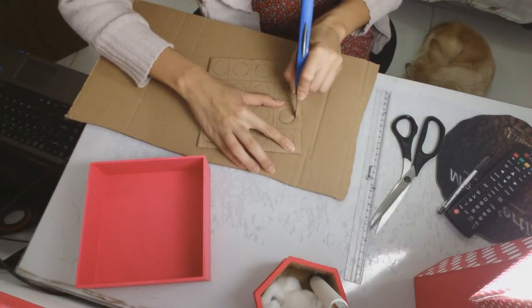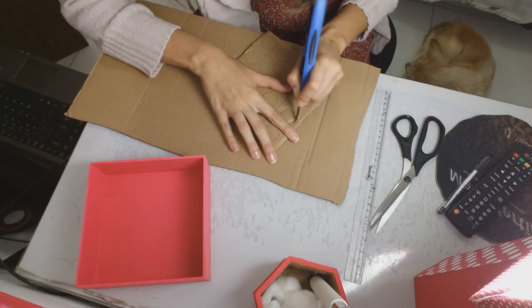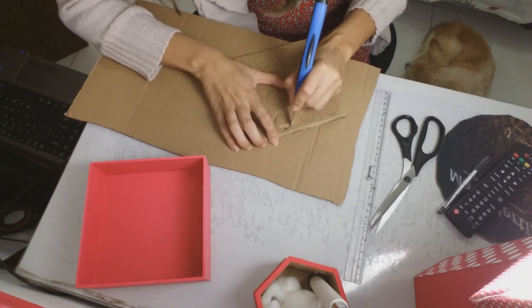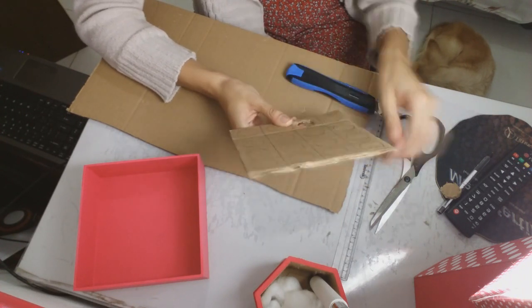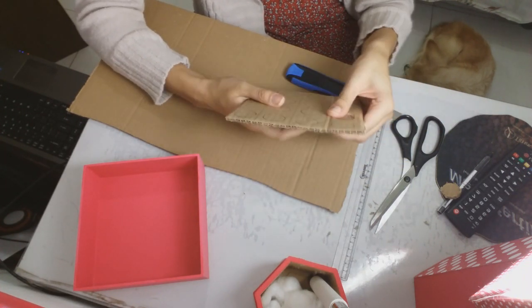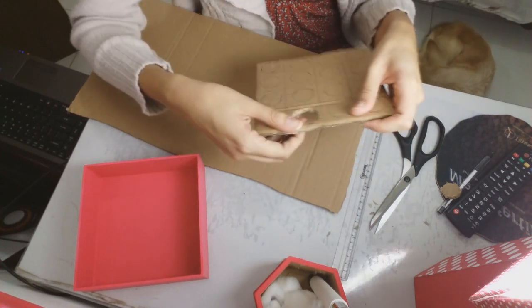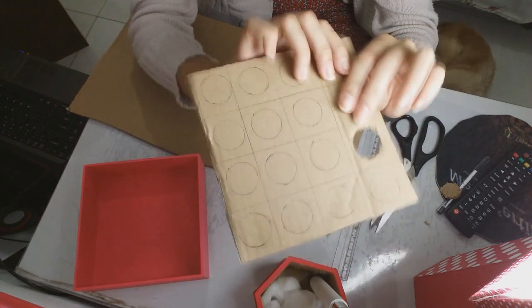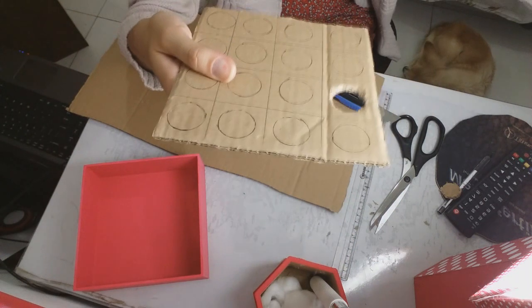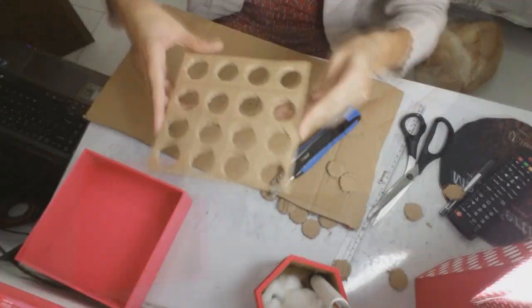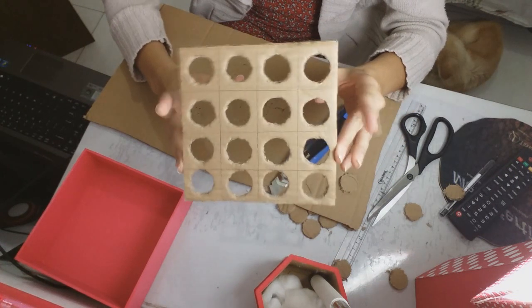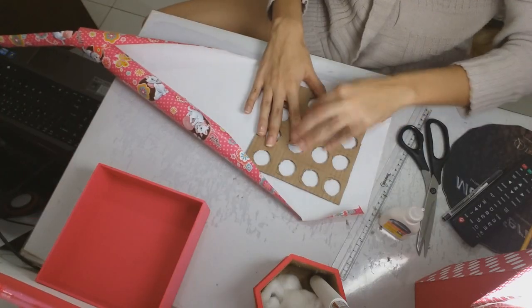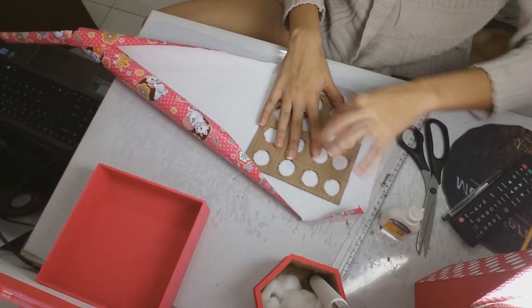Agora você vai cortar os círculos com estilete, com muito cuidado. Pronto. Todos os círculos cortados. Agora vamos cobrir toda essa área com cola branca e forrar de papel de presente.